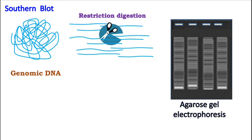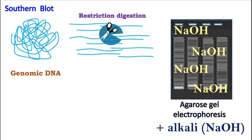As there are many fragments produced due to restriction digestion, a smear is observed on the agarose gel. The agarose gel is then treated with an alkali to separate the double-stranded DNA into single-stranded DNA.